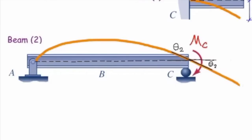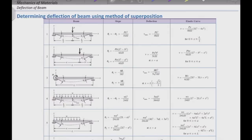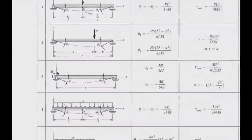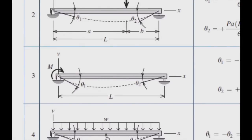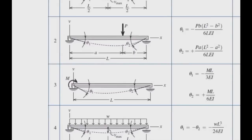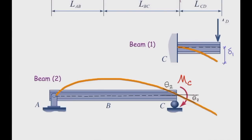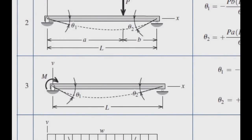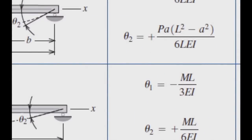Due to this moment, the simply supported beam deflects and rotates at point C, which causes the right part to move downward. To find the slope at point C, we go back to the table. Figure number three is the appropriate one for calculating beam slope caused by external moments. There are two values, theta one and theta two — we need the slope at the point where the moment is acting. In this figure, that slope is theta one, given by theta = ML / 3EI.